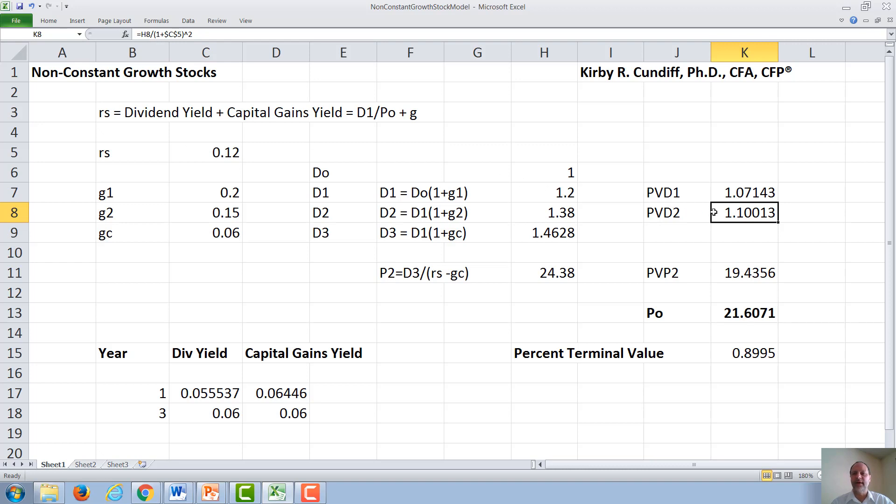We will then need to know what the value of the stock would be right after dividend D2 was paid, which we will call P2. At that point, this becomes a constant growth stock, so P2 will be D3 over Rs minus g constant, or 1.46 divided by 0.12 minus 0.06, or 24.38. So that would be the value of the stock right here after dividend D2 was paid.